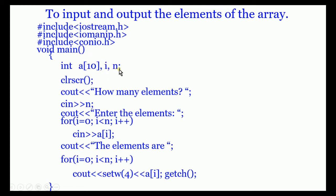Inside main: int a[10] declares an array of size 10. Variable i acts as loc from the algorithm. Variable n acts as the upper bound. We clear the screen, then ask how many elements — with cin >> n. We declared a[10] but we can take any number of elements up to 10.